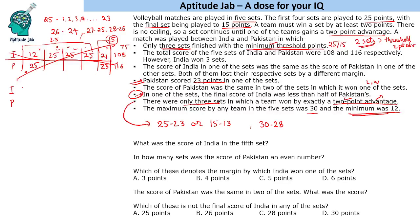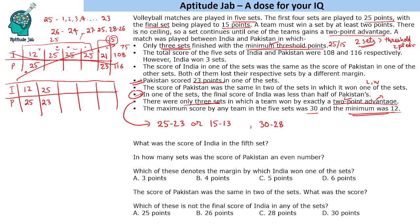So we move to the next scenario: Pakistan scores 23 in one of the initial four sets. Since 23 is below the threshold, India's score would be 25 in this set — because even with a two-point advantage, it cannot go beyond 25. So 23 means the winning score will be 25 only.